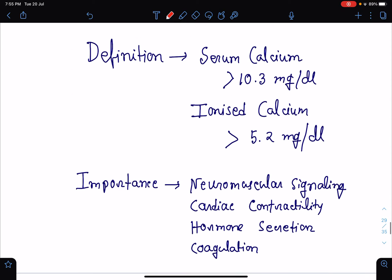Let's see what is hypercalcemia. As per the definition, when the serum concentration of calcium goes above 10.3 mg per deciliter or if the concentration of ionized calcium goes above 5.2 mg per deciliter, then it is considered as hypercalcemia.